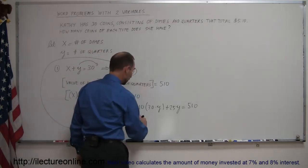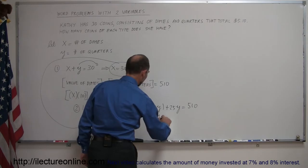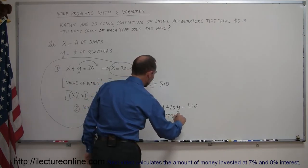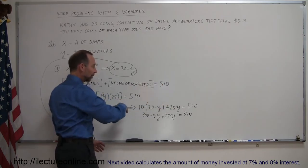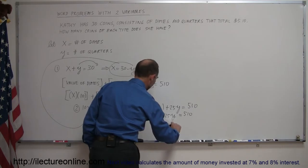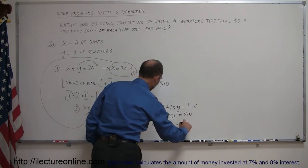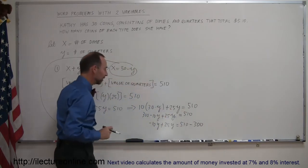Solving that for the variable, we first get rid of parentheses, so we have 300 minus 10y plus 25y equals 510. Moving all the numbers to one side, all the variables to the other side, we have minus 10y plus 25y equals 510 minus 300. By moving the 300 to the other side, it becomes minus 300.